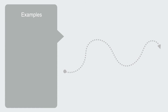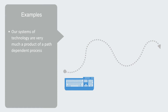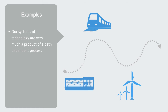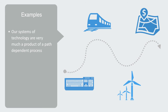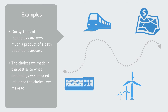When we look around us, we can see that our systems and technology are very much a product of a path-dependent process. Why do we still use the QWERTY keyboard that was designed for typewriters when it is not the most efficient for today's keyboards? Why do we still use the standard gauge train track designed two centuries ago for horse-drawn coal carts to run today's powerful trains when it is far from optimal? Why is it so difficult for us to switch to renewable energy sources? Why do businesses all cluster in Silicon Valley when there is nothing special about that particular location? All of these are because the choices we made in the past as to what technology we adopted influence the choices we make today.